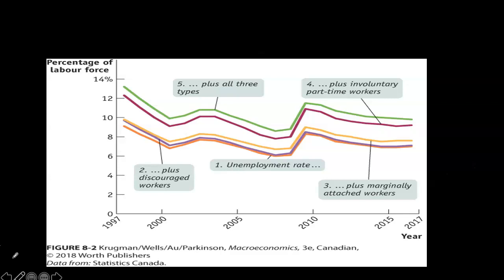Here we have the same story but with actual data for Canada from 1997 to 2017. The official rate is shown in orange. Gradually adding the categories of workers not initially considered unemployed increases the overall rate. For any given year, as we include these categories, the unemployment rate starts to go up. The actual level of unemployment shown by the green line is much higher than the official rate. In periods of recession, such as the 2009 financial crisis, unemployment rises significantly regardless of which statistic is used.